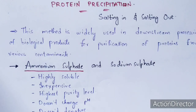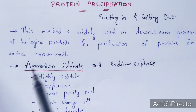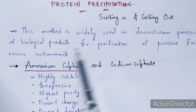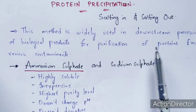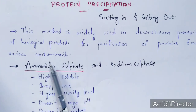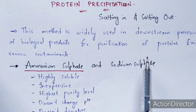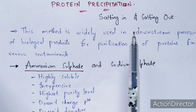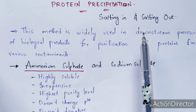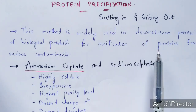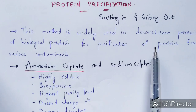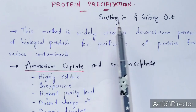So let us learn about it properly. Protein precipitation is a method which is widely used in downstream processing of biological products for purification of proteins from various contaminants. Contaminants are harmful particles which are attached to the proteins. The main aim of precipitation is to obtain proteins in a pure form rather than an impure form. Proteins are made up of amino acids, as we all know.